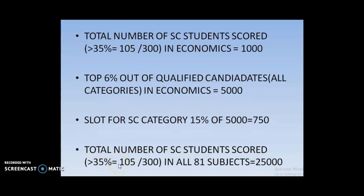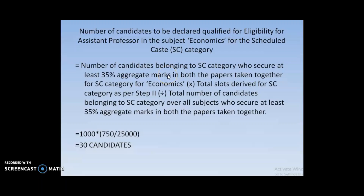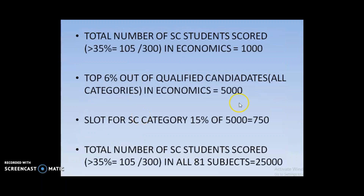Now, the total number of SC students who scored greater than 35% in both Paper 1 and Paper 2 across all 81 subjects conducted by UGC equals 25,000 candidates. With these figures, we apply the formula given by NTA. The number of candidates to be declared qualified for assistant professor eligibility in Economics for the SC category equals: number of SC candidates securing at least 35% in Economics (1000) multiplied by total SC slots derived from Step 2 (750).